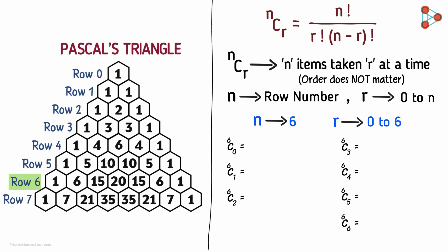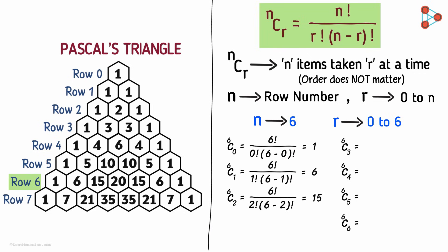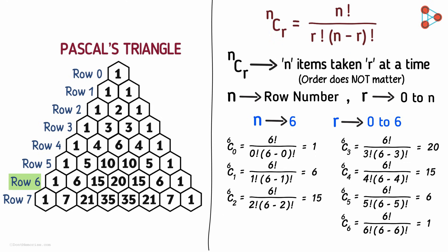Try finding each of these values using the formula. We get the values as 1, 6, 15, 20, 15, 6, and 1. And yes, these are the terms in the sixth row of Pascal's triangle.